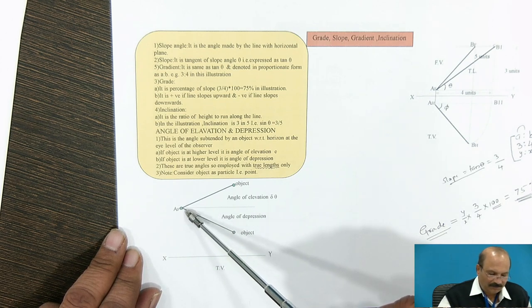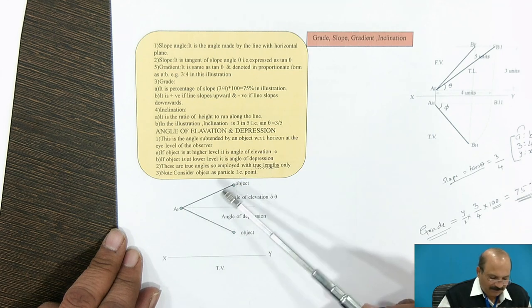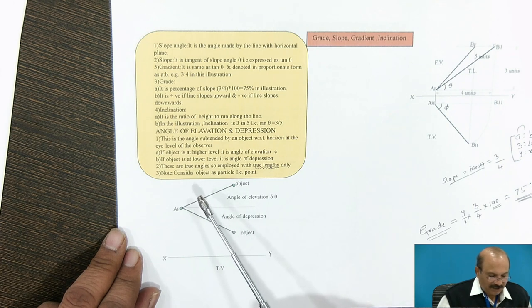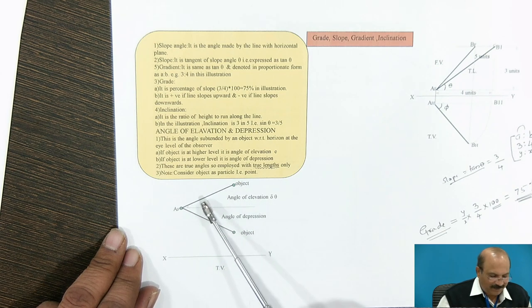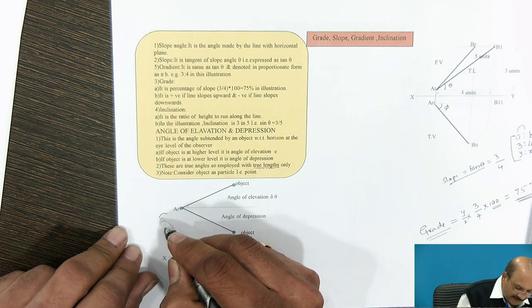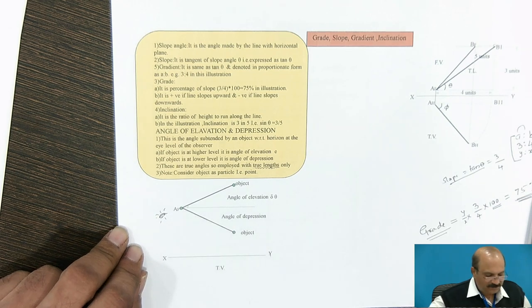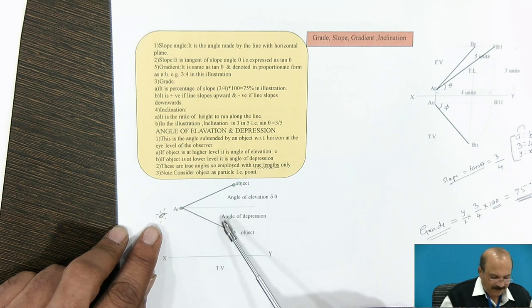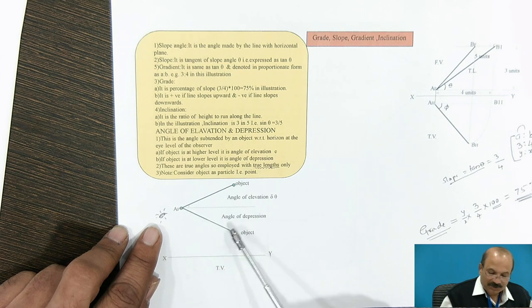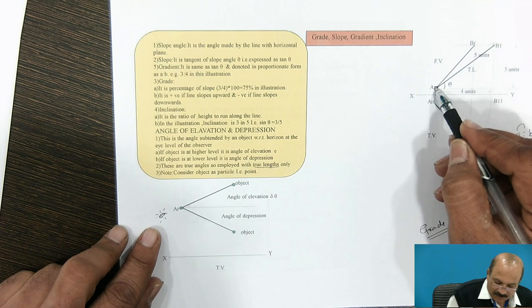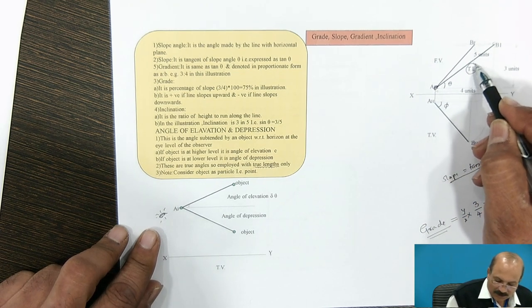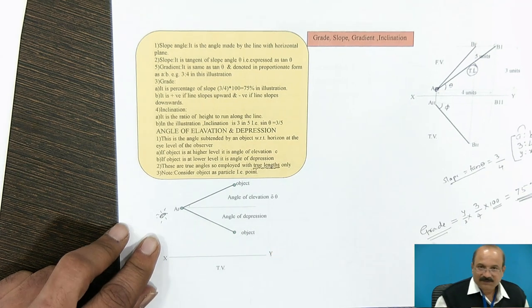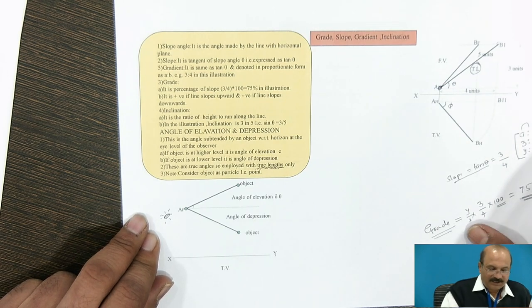Angle of elevation or angle of depression is given with reference to any one point. The important thing is this is the angle subtended by the object with respect to the horizon at the eye level. If the object is at a higher level — angle of elevation; if at a lower level — angle of depression. These are true angles, employed with true lengths only. This is related with grade, slope and gradient.